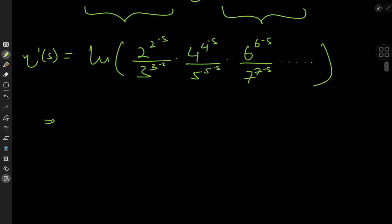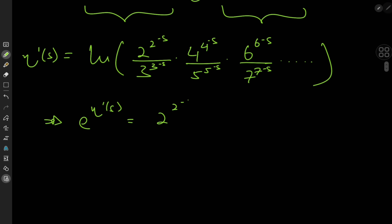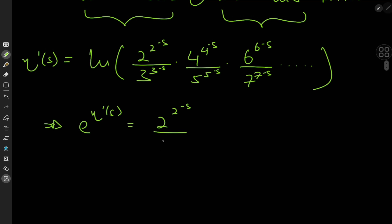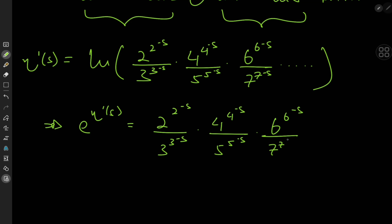Exponentiating both sides gives e^(η'(s)) equal to the infinite product: [2^(2^(−s)) / 3^(3^(−s))] times [4^(4^(−s)) / 5^(5^(−s))] times [6^(6^(−s)) / 7^(7^(−s))], and on and on we go.